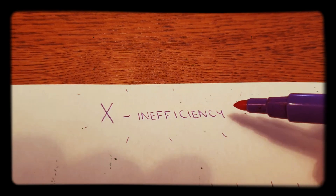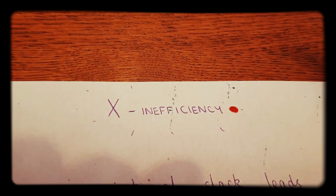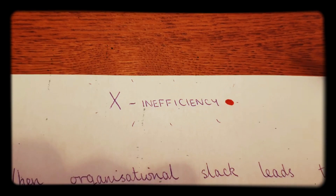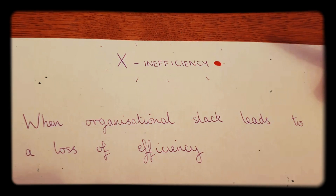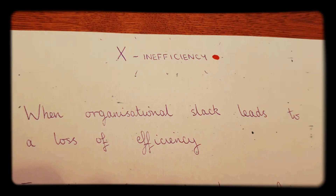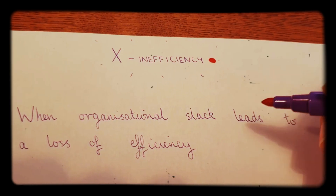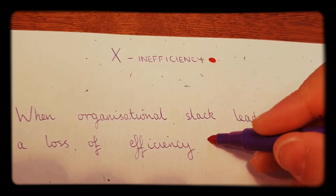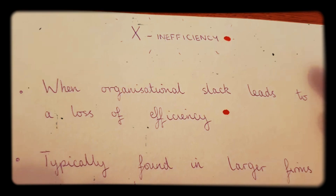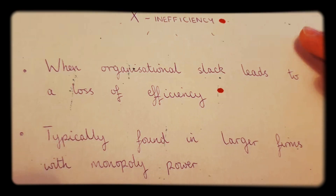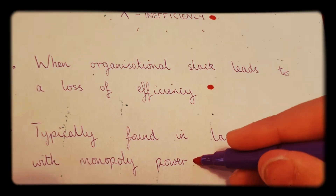In this video we're going to be looking at X inefficiency. What is X inefficiency? It's basically when organisation or slack leads to a loss of efficiency in firms. It's typically found in larger firms with monopoly power.